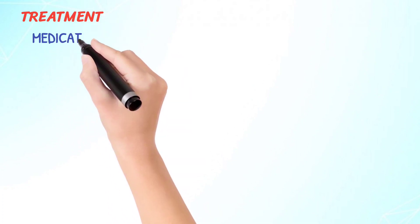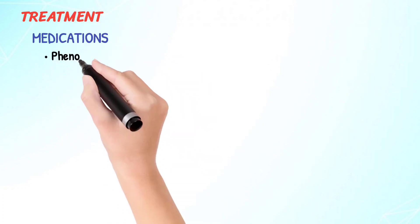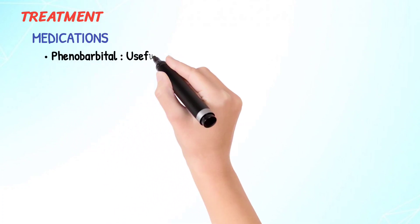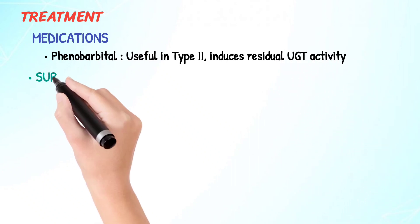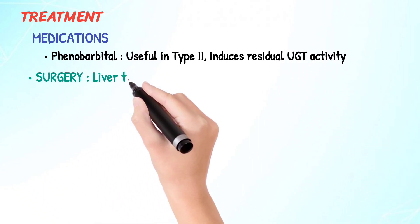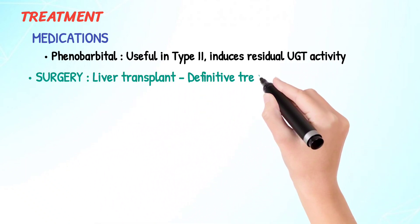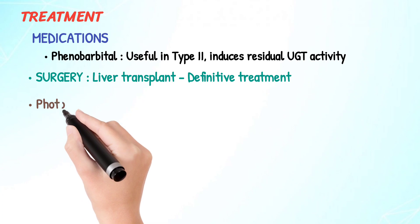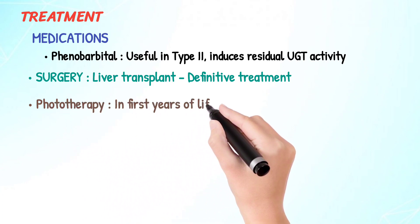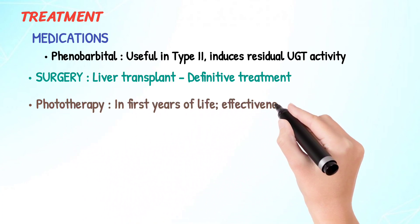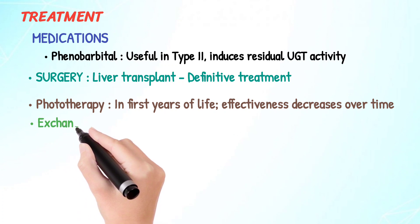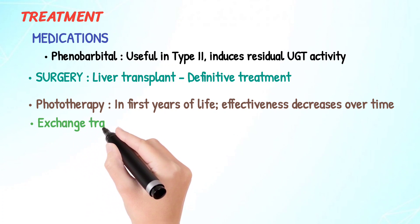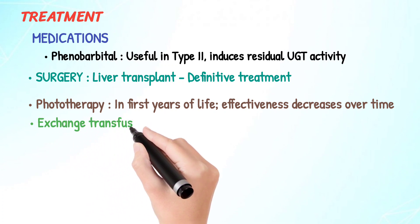Treatment options include: medications — phenobarbital is useful in Type 2 as it induces residual UGT activity; surgery — liver transplant is the definitive treatment; phototherapy in the first years of life, though effectiveness decreases over time; and plasmapheresis plus albumin infusions, as well as exchange transfusion.